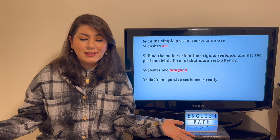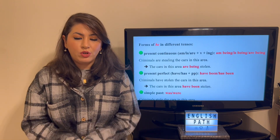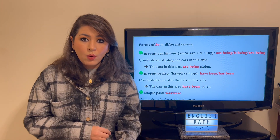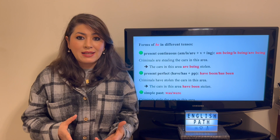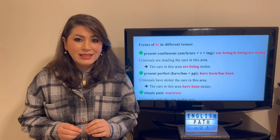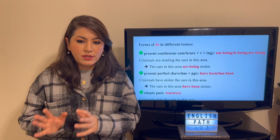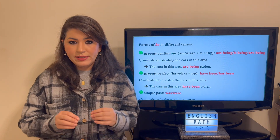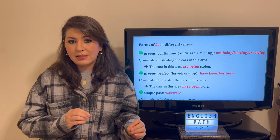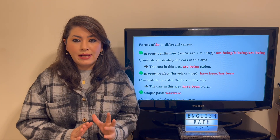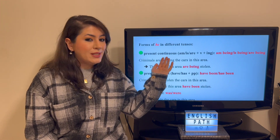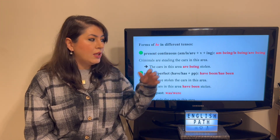You've got your passive voice sentence. Now that you know the simple formula for forming passive sentences from active sentences — or forming passive sentences from scratch — let's practice the different forms of 'be' in different tenses. You just learned about the forms of 'be' in the simple present tense: am, is, and are. Now let's move on to the rest of the tenses, starting with the present continuous tense.